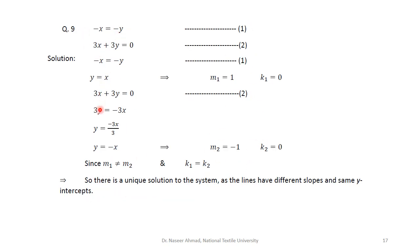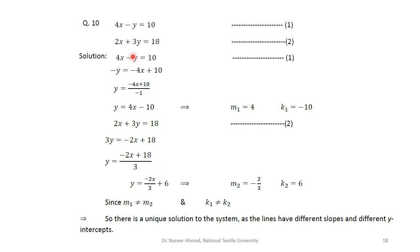For question 9, equation 1 can be written as y equals x, so m1 equals 1 and k1 equals 0. Equation 2 gives y equals minus x, so m2 equals minus 1. Since the slopes are different, the solution is unique.